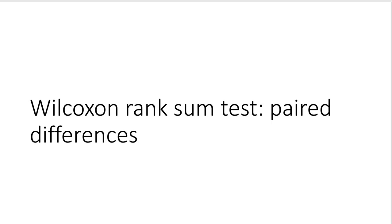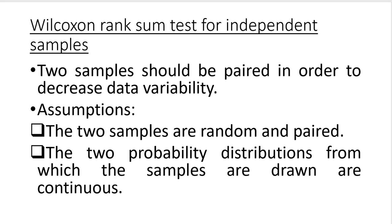Welcome back. In this video we are going to discuss the Wilcoxon rank sum test for paired differences. Two samples should be paired in order to decrease data variability, as discussed in the previous lecture — when you analyze people of the same characteristics like gender, age, and so on, you decrease data variability significantly, giving you more freedom when testing the research hypothesis. There are two assumptions: the two samples should be random and paired, and the two probability distributions from which the samples are drawn should be continuous.